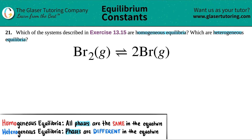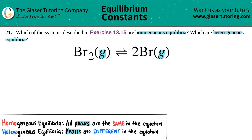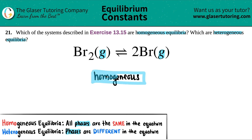Don't even care about what the molecules or compounds are. Br2 was a gas, and Br was also a gas. Since these are gases and they are the same, and that's the only ones that we got, this would be classified as homogeneous equilibria — homogeneous equilibrium.